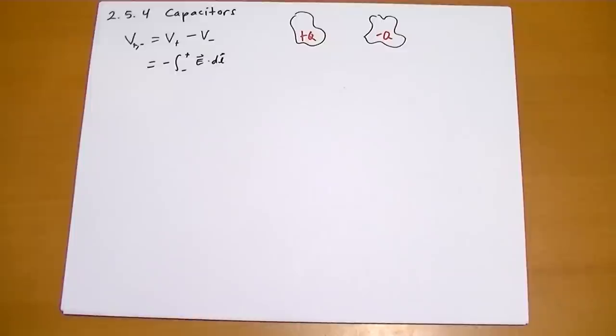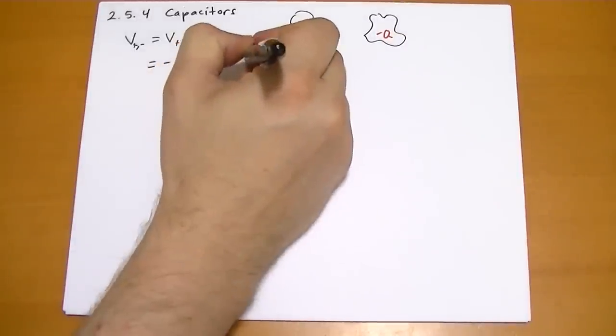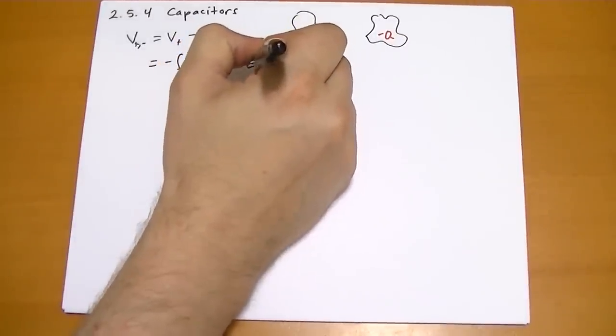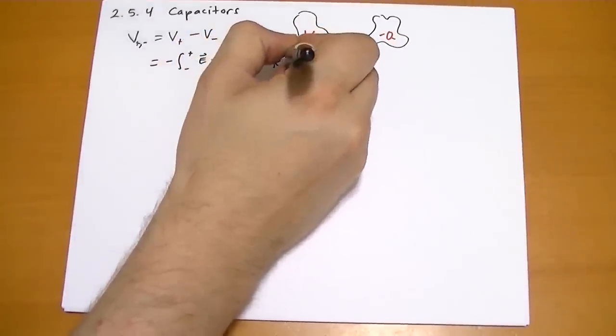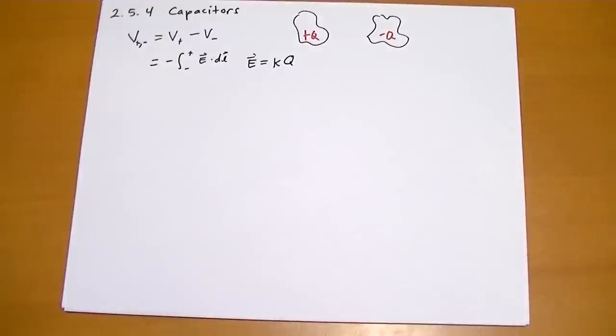Okay? What is the electric field? Given the geometry of those shapes, I can't tell you. But I do know that the electric field is proportional, some constant k times the charge on each of the objects.